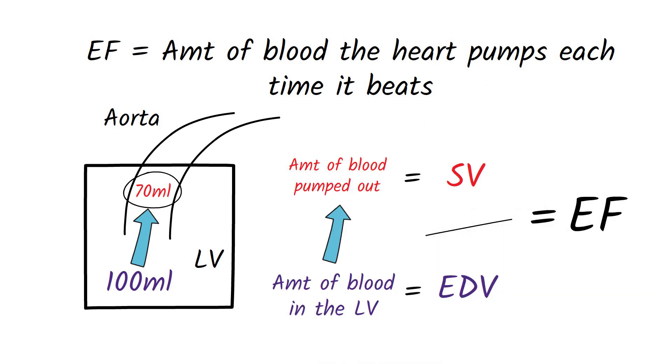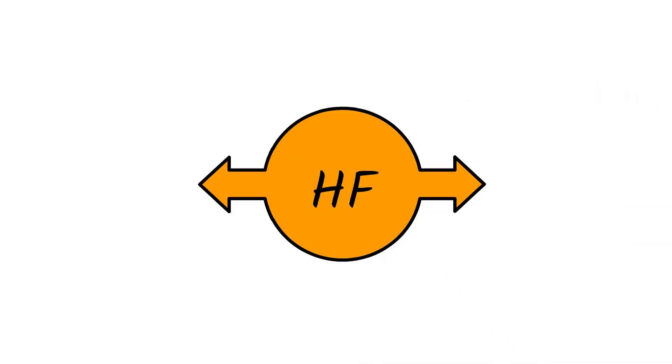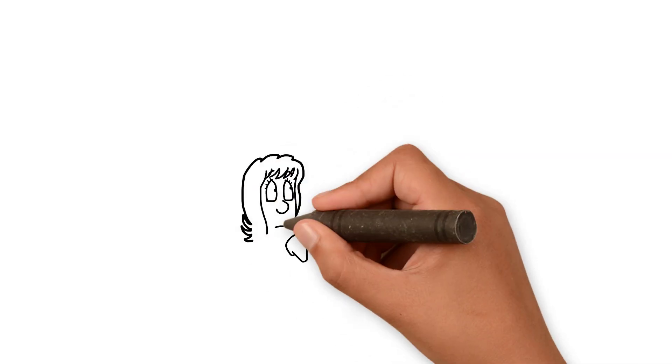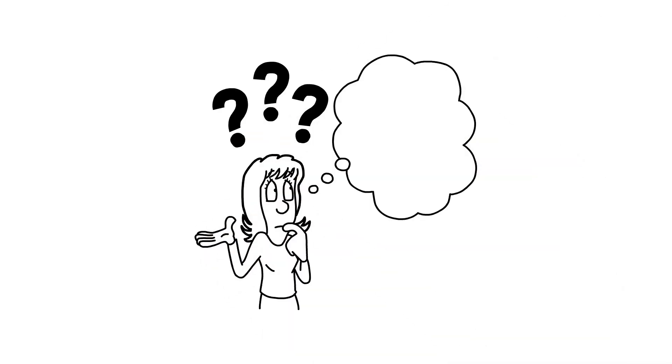The normal ejection fraction is 55-70%. Heart failure can be classified into heart failure with reduced ejection fraction, also known as systolic heart failure, and heart failure with preserved ejection fraction, also known as diastolic heart failure. The main difference between these two types of heart failure is the ejection fraction.